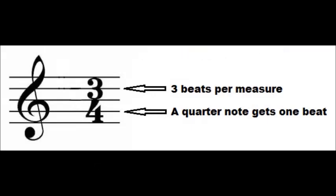For a 3-4 time signature, the three at the top indicates that there are three beats in a measure. The number four at the bottom indicates that a quarter note gets one beat.